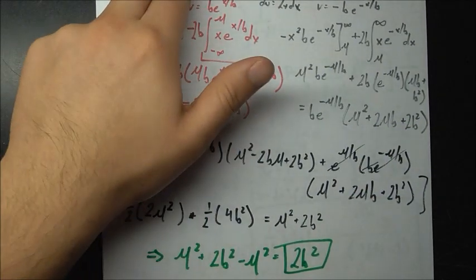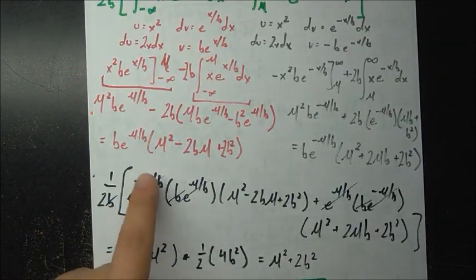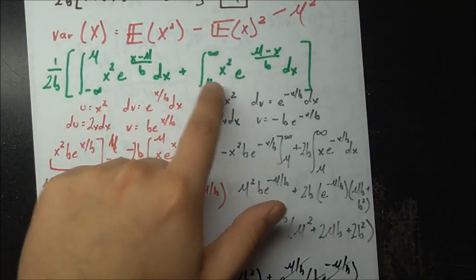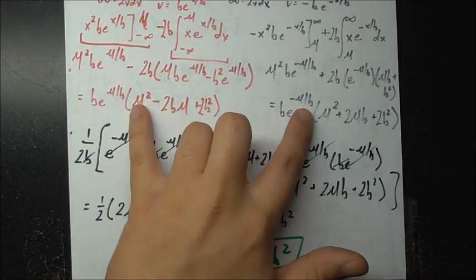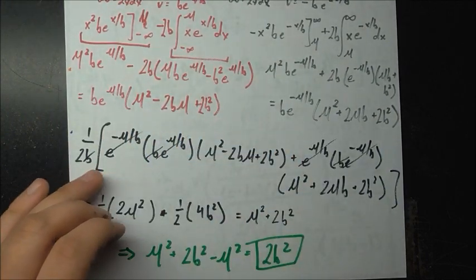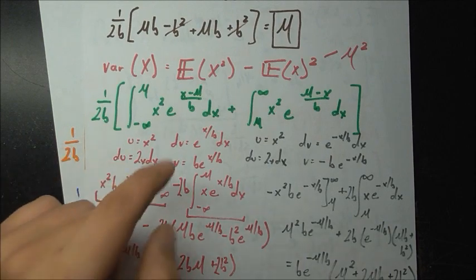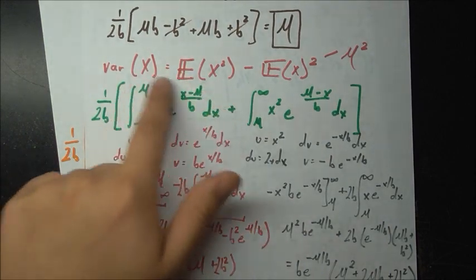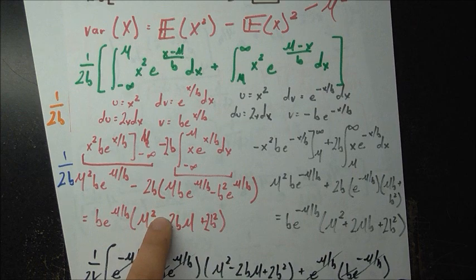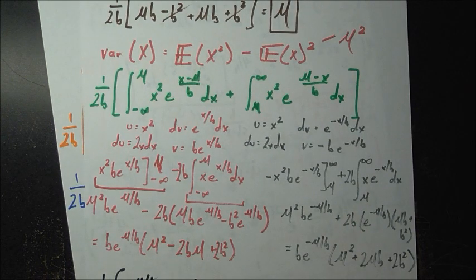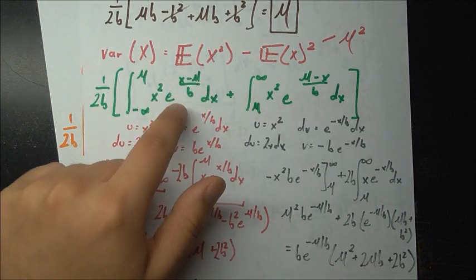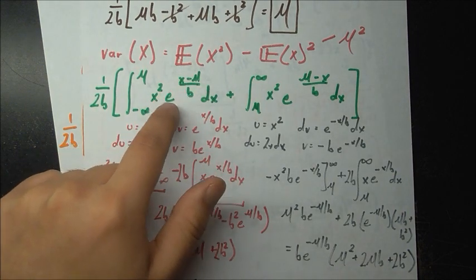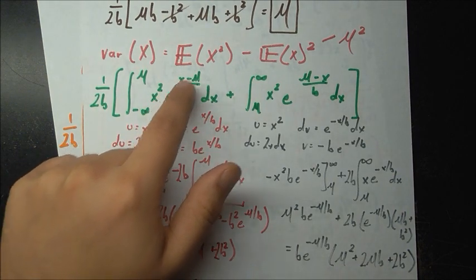The first integral gives one result and the second gives another, and I plug them right back in. Let me make a quick note: this is not exactly the raw integral — I did a simplification by factoring e to the x minus mu over b as e to the x over b times e to the minus mu over b, pulling that constant out. So the remaining integral from minus infinity to mu of x squared e to the x over b dx is what appears here, and similarly for the other integral.